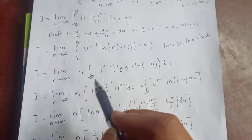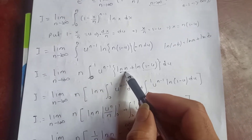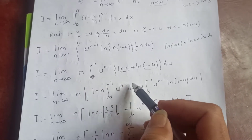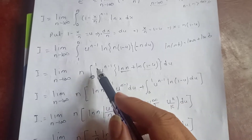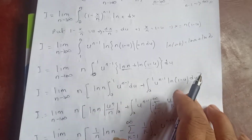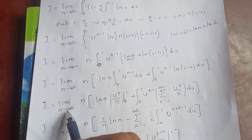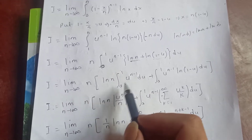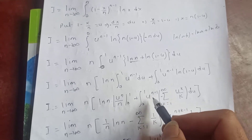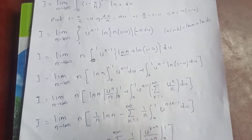Separating the two terms: I = lim_{n→∞} n · [log(n) · ∫₀¹ u^(n-1) du + ∫₀¹ u^(n-1) log(1-u) du]. The first integral evaluates easily: ∫₀¹ u^(n-1) du = [u^n / n]₀¹ = 1/n.